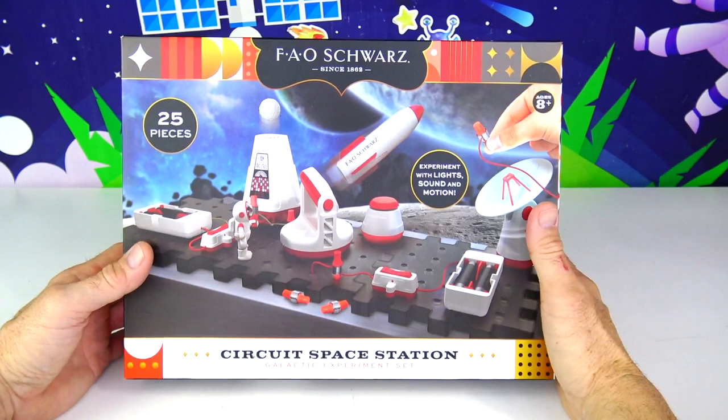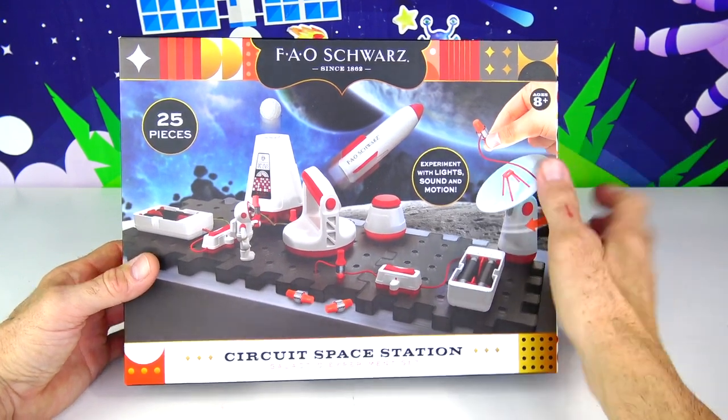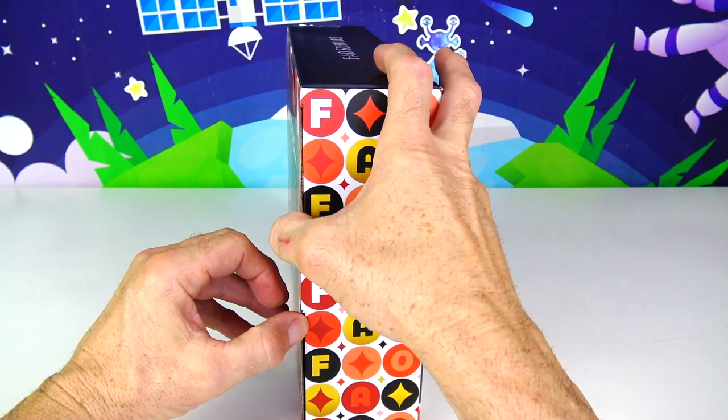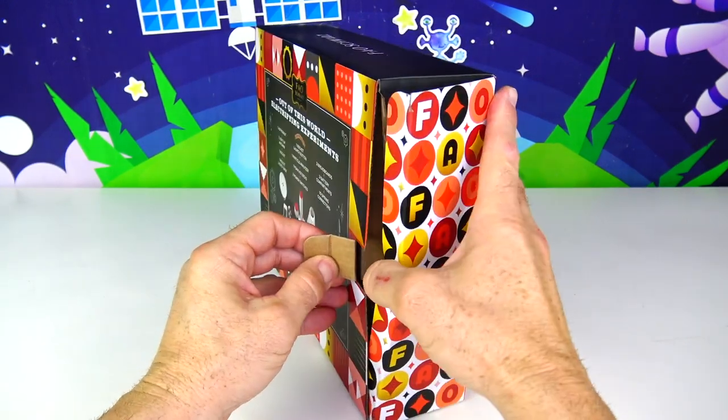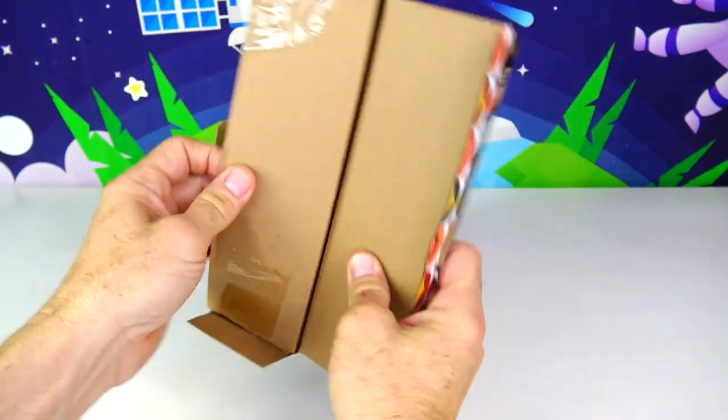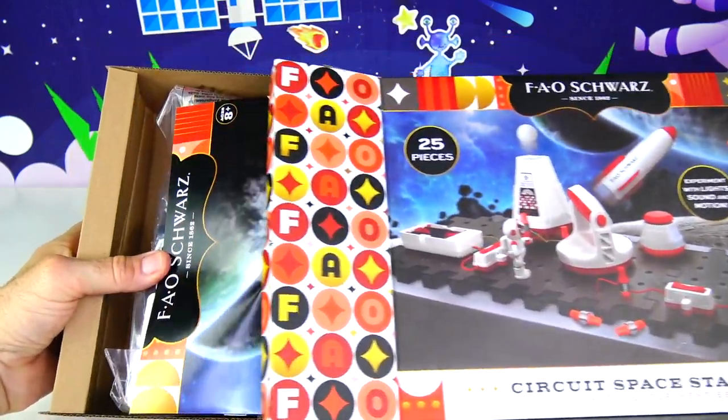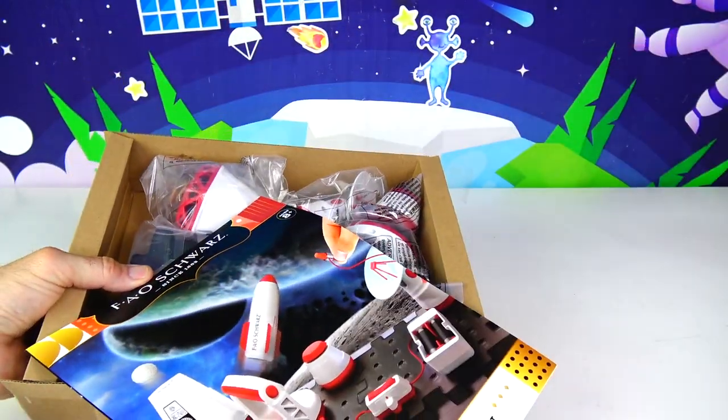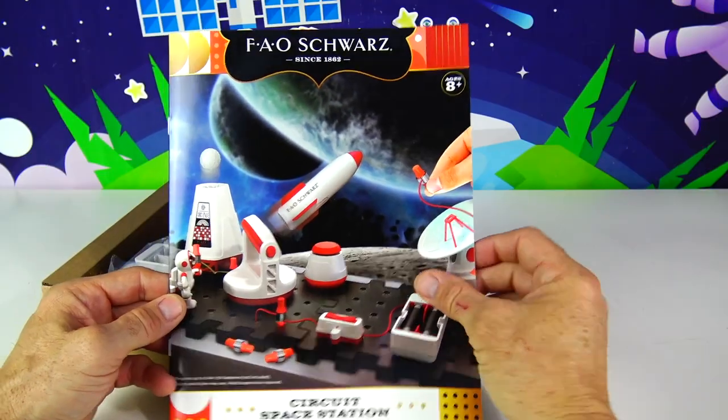It's out of this world. Alright guys, we're on the other table and here's our FAO Schwartz Circuit Space Station Galactic Set. So let's open this thing up. I'm excited to see what is inside this box. A lot of stuff in here. So look at that cool book. That is our instructions manual. And then it goes through all the contents on the first page.